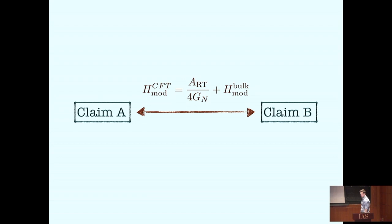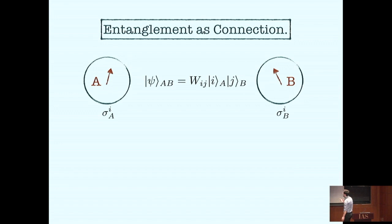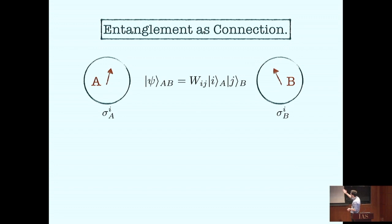I want to start by talking about this idea — that entanglement should be thought of as a connection — in the simplest case possible. Consider two qubits. Alice has qubit A in her lab; Bob has qubit B. Each of them can perform an operation on the qubit they have, and they're in an entangled state — in fact, a maximally entangled state. W_IJ are the coefficients summed over I and J. A specific example to keep in mind: up-up plus down-down with some relative phase.